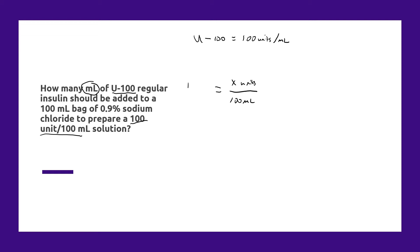So we put on the right-hand side in the numerator what we're solving for. So X units per 100 mL bag of sodium chloride solution equals our desired concentration, which is 100 units per 100 mL. We need to keep the units consistent in the numerator and denominator positions.